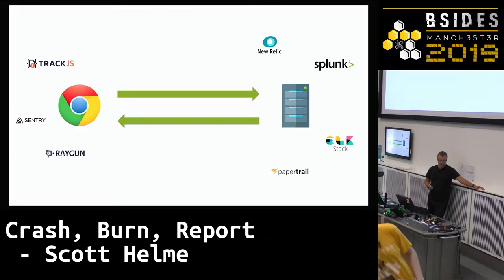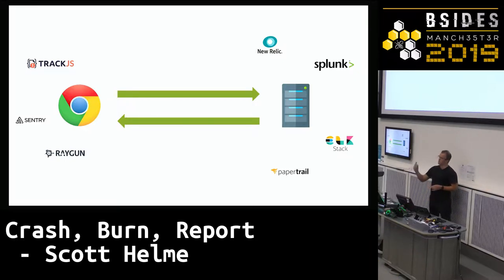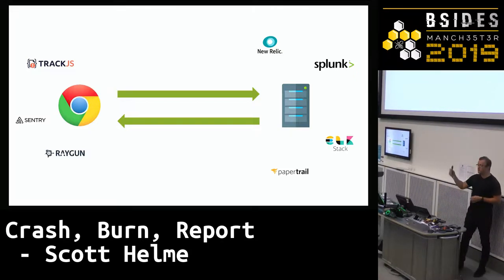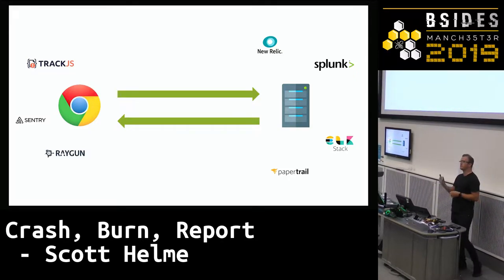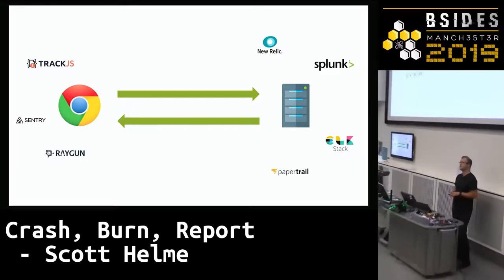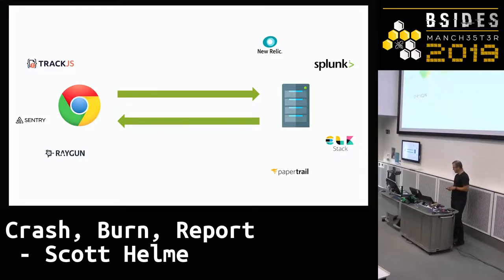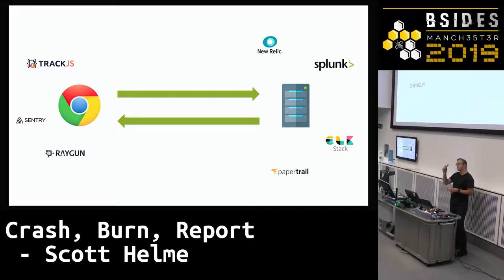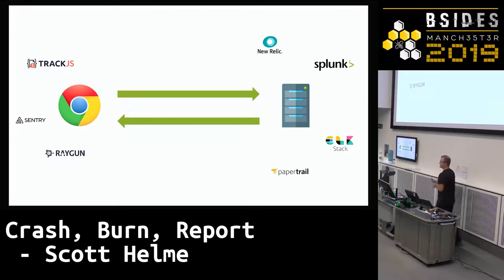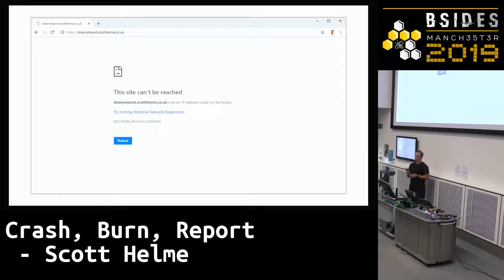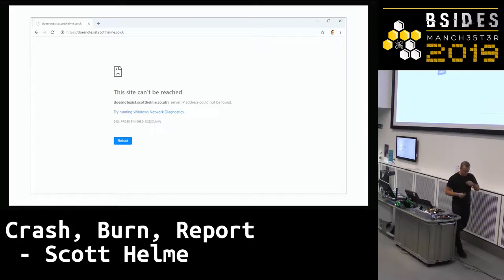As application owners, as site owners, we want to know when stuff goes wrong so we can fix it — that's the whole point of monitoring and telemetry. But there's a prerequisite: the person actually visits your site. What if they try to go to your site and can't get there? There are whole scenarios where someone tries to come to your website and doesn't make it — like if your DNS isn't resolving.